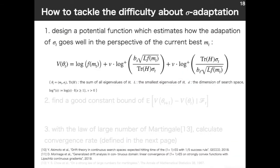The next is analyzing technique to tackle the difficulty about σ adaptation. First, we design a potential function which estimates how the adaptation of σ goes well in the perspective of the current best candidate solution m_t. This kind of potential function is first proposed in [10] for isotropic convex quadratic function, and generalized in [11] for strongly convex and Lipschitz smooth function, which is a superset of a convex quadratic function, in order to show a convergence rate is at least constant. We modify this for a general convex quadratic function in order to evaluate a concrete convergence rate.